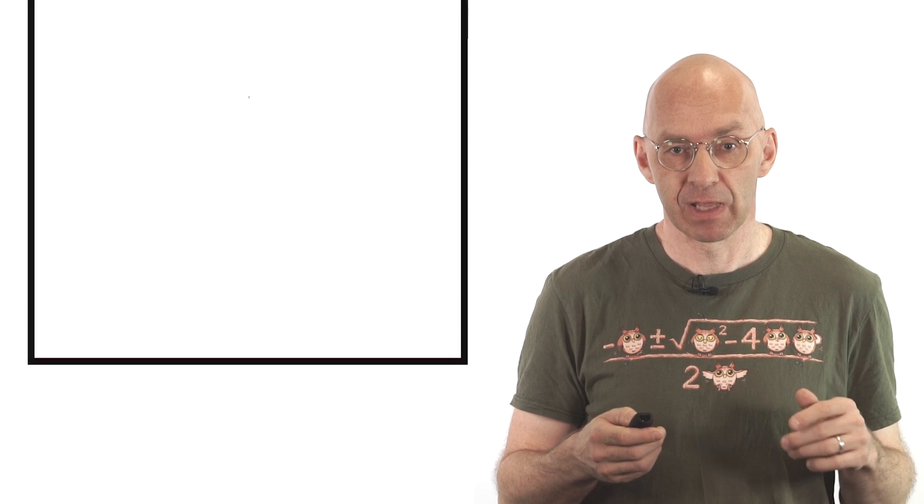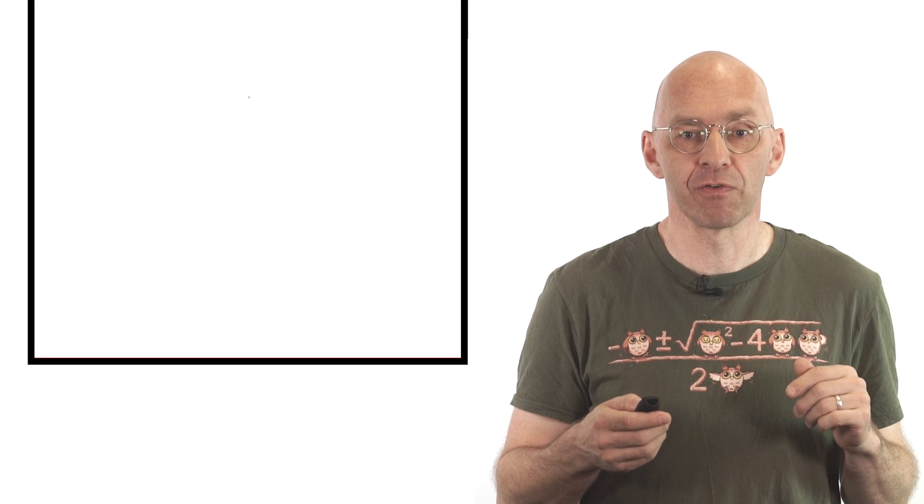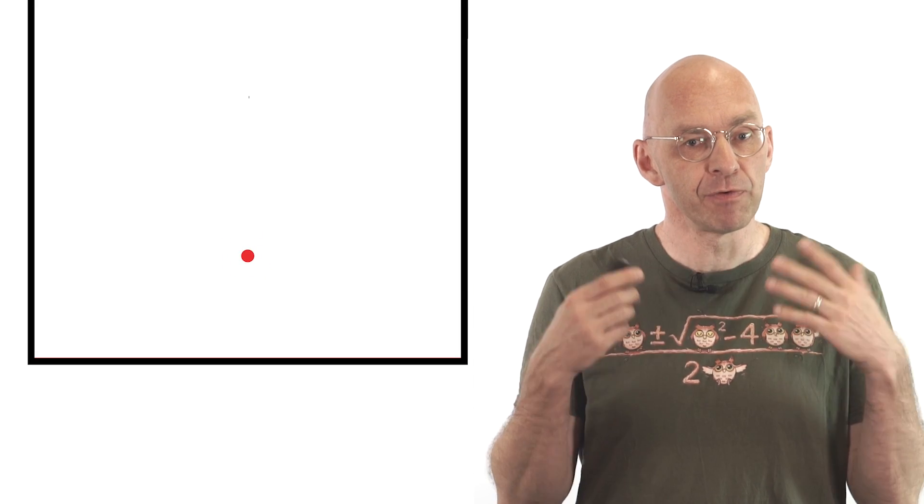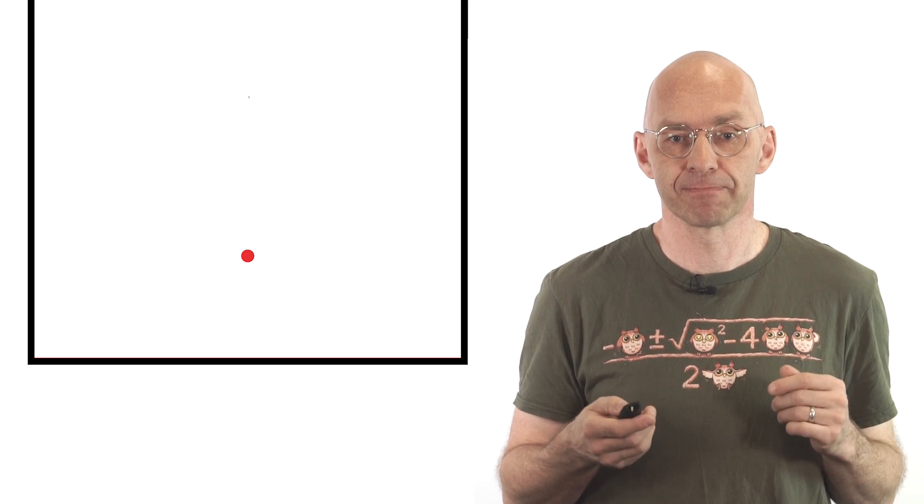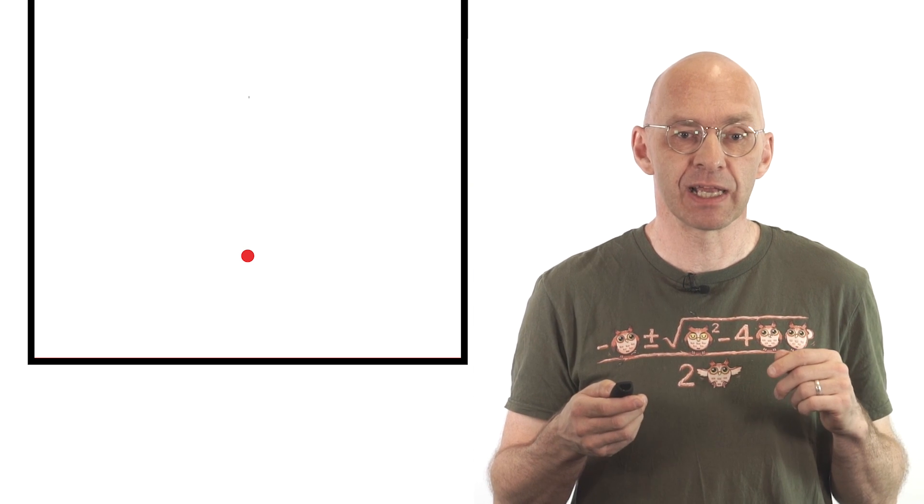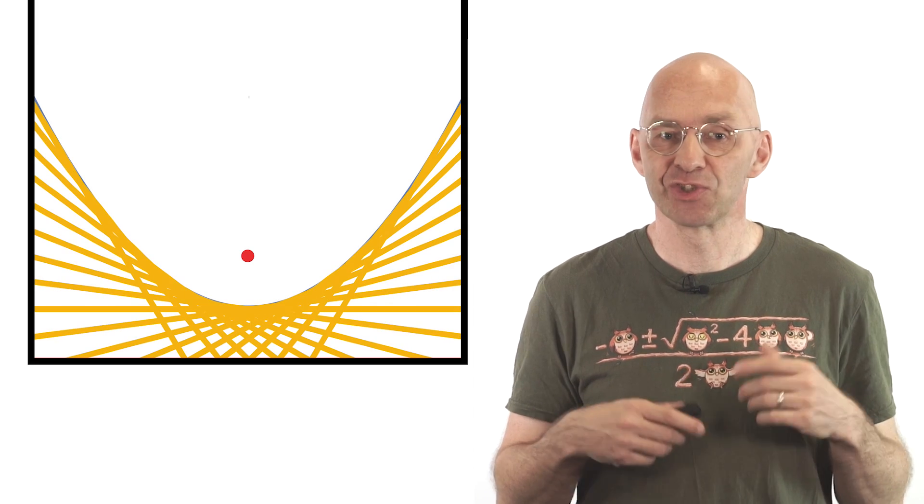The second property gives a really pretty way to create a parabola from scratch without having to calculate anything. Start with a piece of paper, mark a point close to the middle of one of the sides and perform the folding action for a bunch of points on the side. Then the parabola materializes as if by magic. Super super nice.